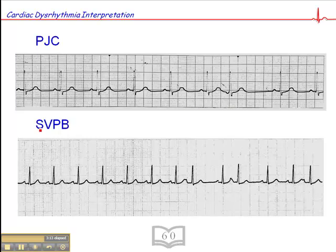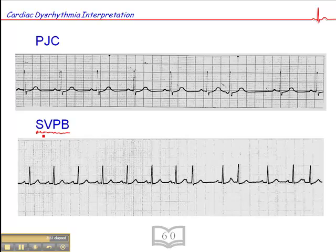Down below here is a term you really won't hear used — at least I've never heard it used — in the pre-hospital or emergency room setting. But I used to work as a cardiology technologist, and cardiologists sometimes use this term: supraventricular premature beat, or SVPB. SVPB is a broad term to describe any ectopic beat that occurs above the bifurcation of the bundle branches — supraventricular — where we're not sure if it's a PAC or PJC.